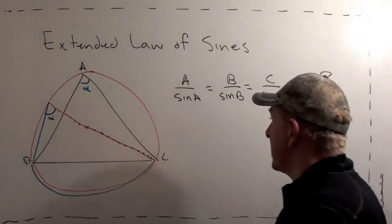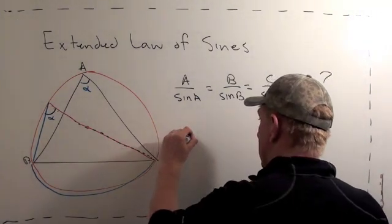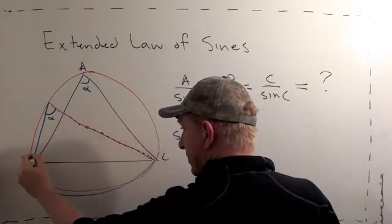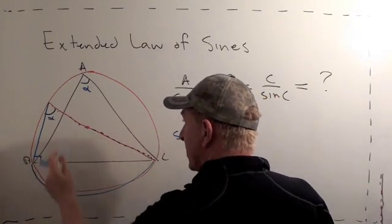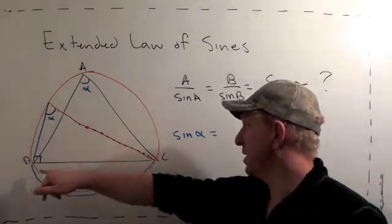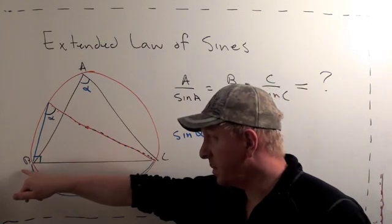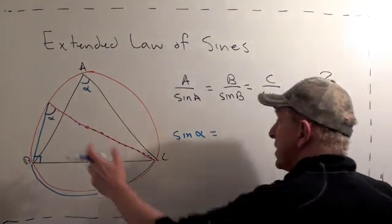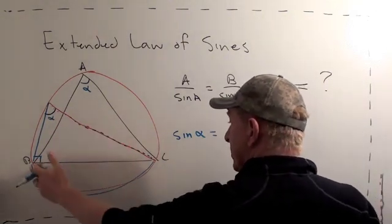So what is sine of alpha? Equals opposite over the hypotenuse. Notice, the second important fact is this triangle is inscribed in a semicircle, and therefore this angle, which is not B in our triangle, it's a new angle, is a right angle. So sine alpha equals opposite over the hypotenuse.